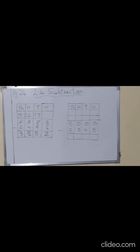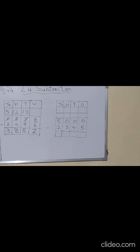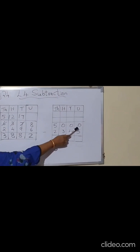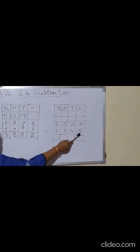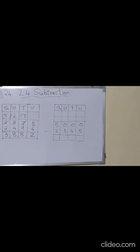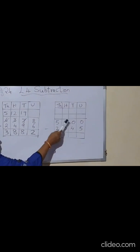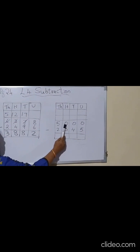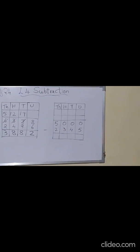Now let's see the second sum. The second sum is 5000 minus 2345. Now if you see here you are having 0, 0, 0 and 5. Now can you minus from 0 five? We cannot minus. So we have to take from the neighbor. Now each neighbor is also having 0, so we cannot take from the neighbor. Then we have to take from the other neighbor. From here also we cannot take because there is also 0.